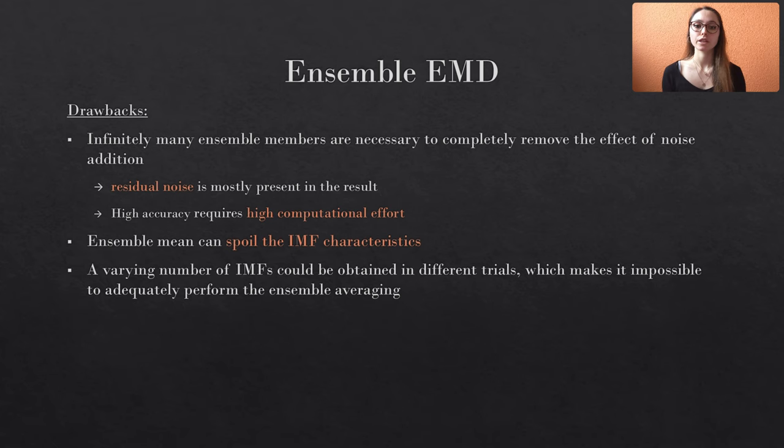Another disadvantage is that the typical IMF characteristics might be lost during the averaging process, so that the final IMFs might not possess the desired properties. And you're probably also facing the issue that different trials produce a varying number of total modes, and there is no unambiguous approach to perform the ensemble mean. So in summary, there are some severe drawbacks that, at least in my opinion, the method should be applied with great care.